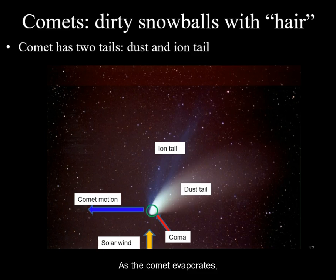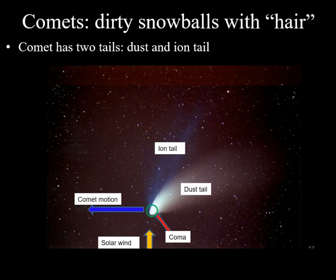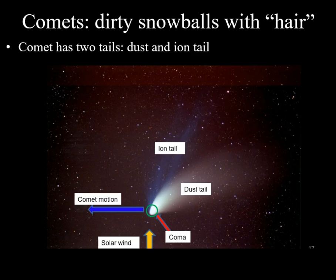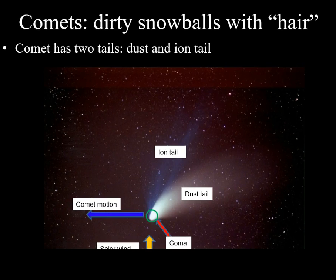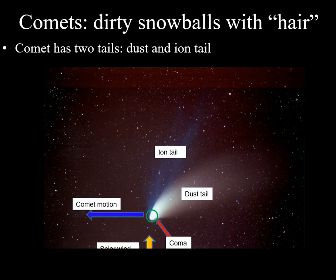As the comet evaporates, some larger chunks of dust also get thrown off. Because these are heavier, they do not get blown off by the solar wind as quickly. Combined with the motion of the comet around the sun and this slowly drifting dust, the resulting shape will be the classic curved dust tail.